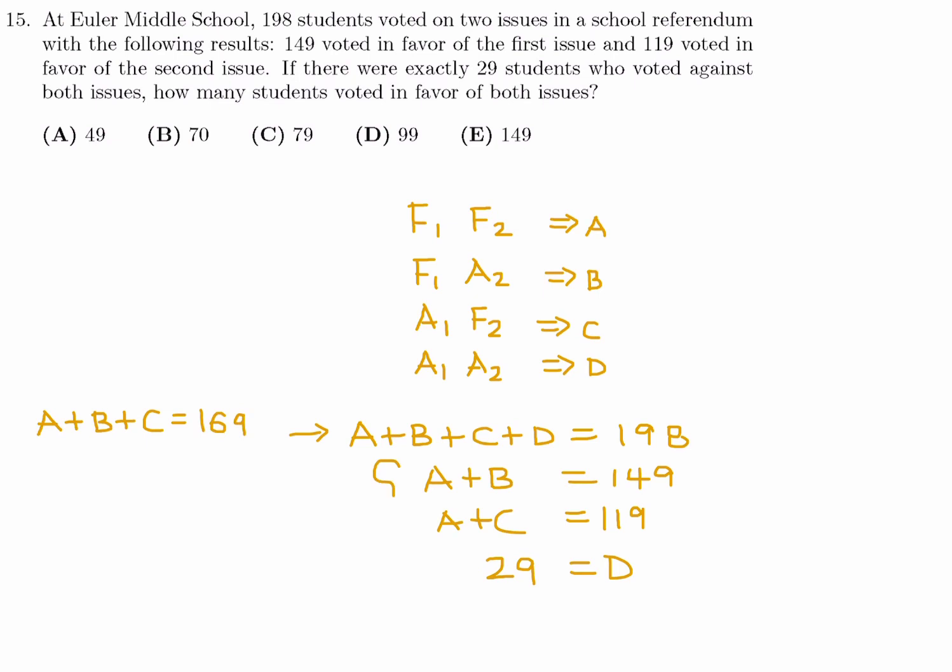So substitute D equals 29 to there. And that gives me A plus B plus C is 198 minus 29, which is 169. And then these two add them up. And when you do, you get 2A plus B plus C is equal to 268. Now you just subtract them. And when you do, you just get left with 268 minus 169. And that's 99.